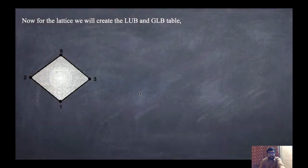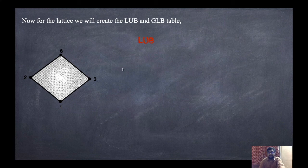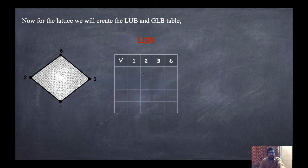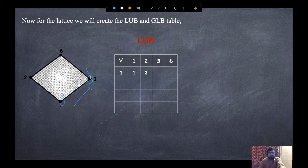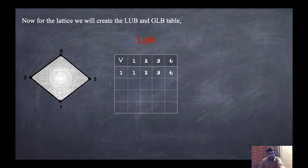For the lattice check, we create the LUB (least upper bound) table and the GLB table. The LUB table has elements {1, 2, 3, 6} in rows and columns. LUB(1,1)=1, LUB(1,2)=2, LUB(1,3)=3, LUB(1,6)=6.